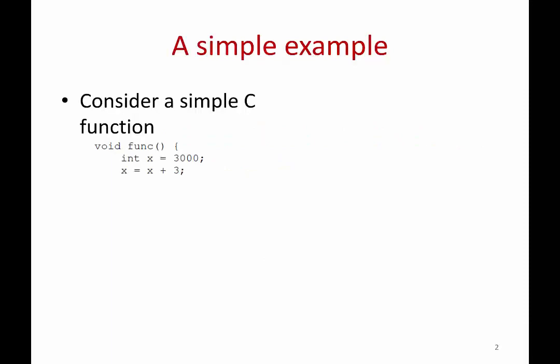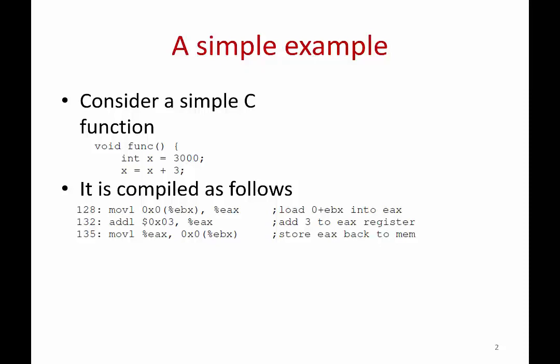Suppose you've written a C program with a function that initializes a variable integer to 3000 and adds 3 to it. This program gets compiled into assembly code. Your executable will have instructions like this: at address 128, there is an instruction that moves a certain location of memory into a register. Each instruction is 4 bytes, so 4 bytes later you have an instruction to add 3 to the register value, and another instruction to store that value back into memory. This function compiles into 3 assembly language instructions, each at certain addresses.